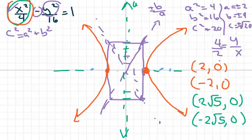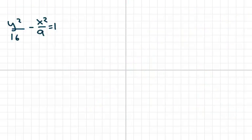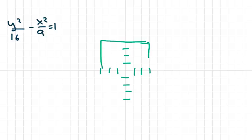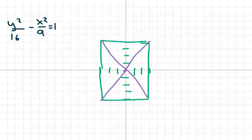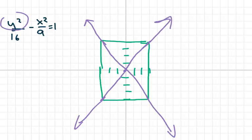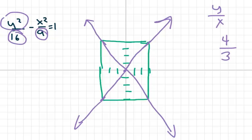For the second example, y goes up 4 and down 4 (square root of 16 is 4), and x goes over 3 (square root of 9 is 3). I draw a box on these points, then draw the asymptotes from corner to corner. The slope of the asymptotes is y over x, so square root of 16 over square root of 9, which is 4 over 3. Since y starts the equation, the hyperbola opens up and down.